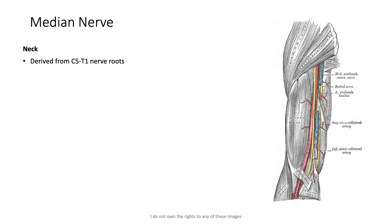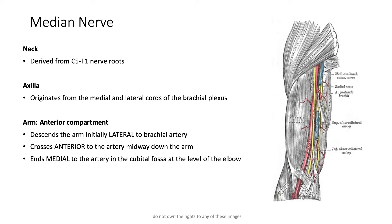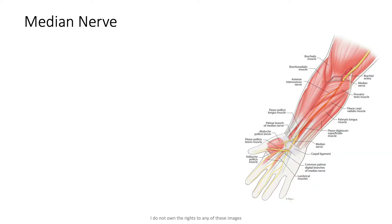The median nerve is derived from the C5 to T1 nerve roots in the neck. It originates in the axilla from the medial and lateral cords of the brachial plexus. It travels down the anterior compartment of the arm, initially situated lateral to the brachial artery, then crosses anterior to the artery midway down the arm, ending medial to the artery before entering the cubital fossa at the level of the elbow.